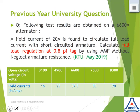Following test results are obtained on a 6600 volt alternator. The test results are tabulated like this: open circuit voltage and field currents in ampere. A field current of 20 ampere is found to circulate full load current with short circuited armature. Calculate the full load regulation at 0.8 power factor lag by using MMF method. You can neglect armature resistance. This question was asked for KTU May 2019 exams for 10 marks.